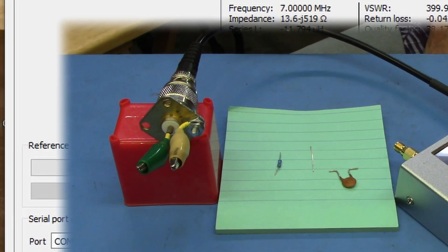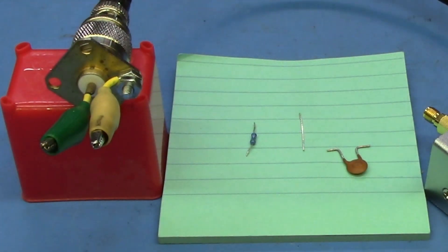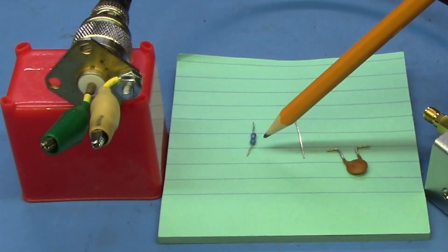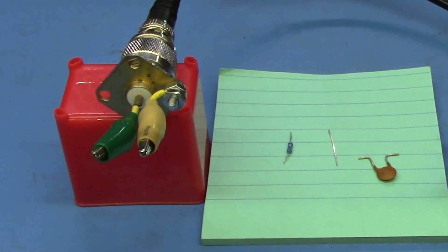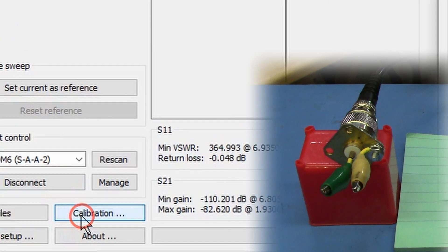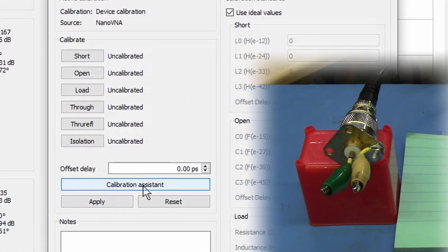Now we have to calibrate. I'm going to use my highly calibrated calibration standards to do it. I have my short, which is a short piece of wire. I have my open, well that's just open clip leads over here. And then I have my high precision load here, which is a 50 ohm, 0.1% metal film resistor with its leads cut really, really short. Alright. Let's go through the calibration process. We come down here to calibration. We are going to use the calibration assistant.